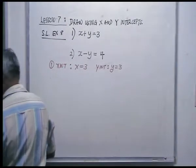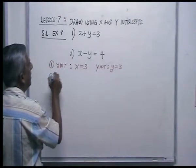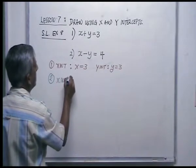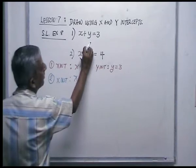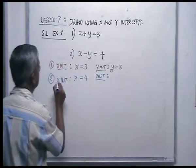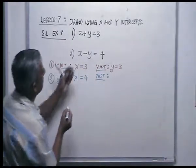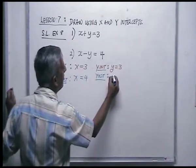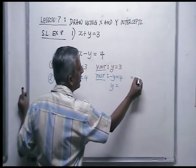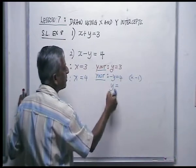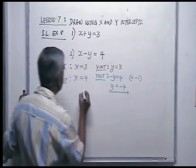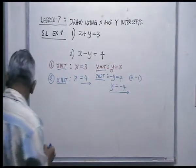For number 2, x minus y equals 4: the x-intercept — put y equal to 0 — gives x equals 4. For the y-intercept, put x equal to 0, so you get minus y equals 4. Multiply both sides by minus 1: y equals minus 4. That's your final answer.